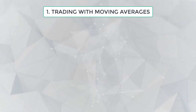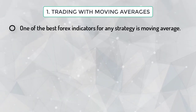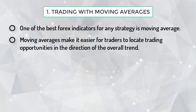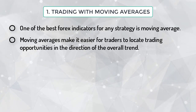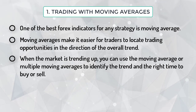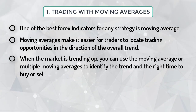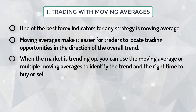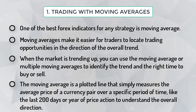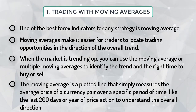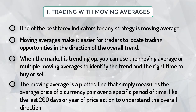Trading with moving averages: one of the best Forex indicators for any strategy is the moving average. Moving averages make it easier for traders to locate trading opportunities in the direction of the overall trend. The moving average is a plotted line that measures the average price of a currency pair over a specific period of time, like the last 200 days or a year of price action, to understand the overall direction.